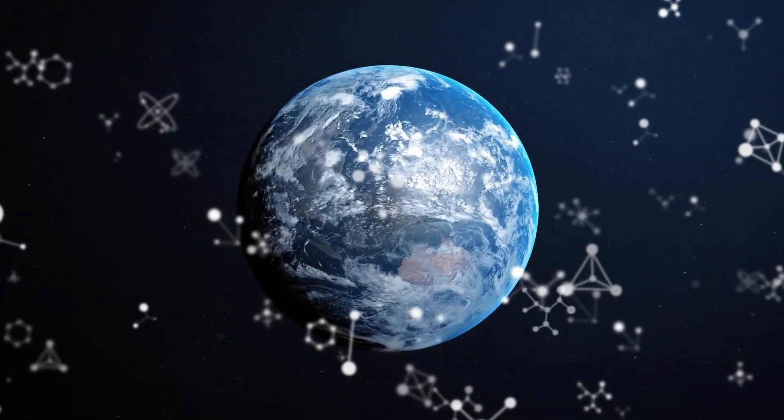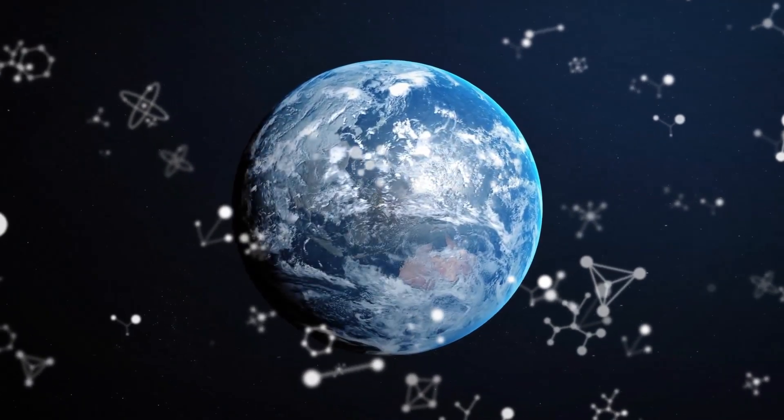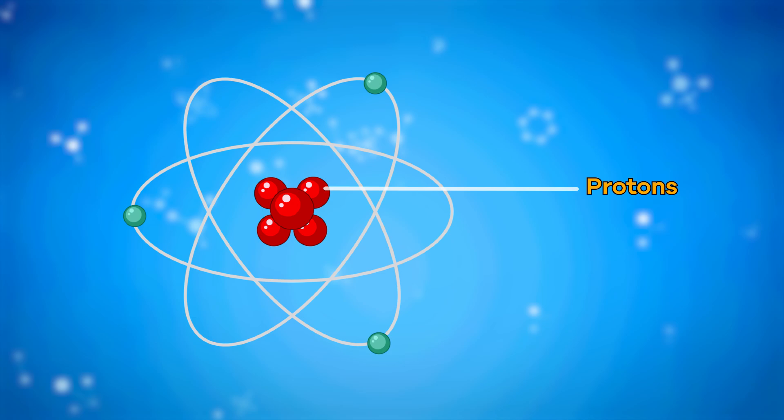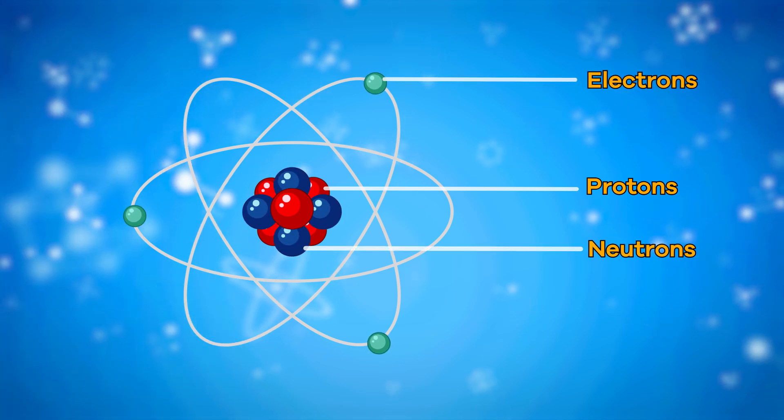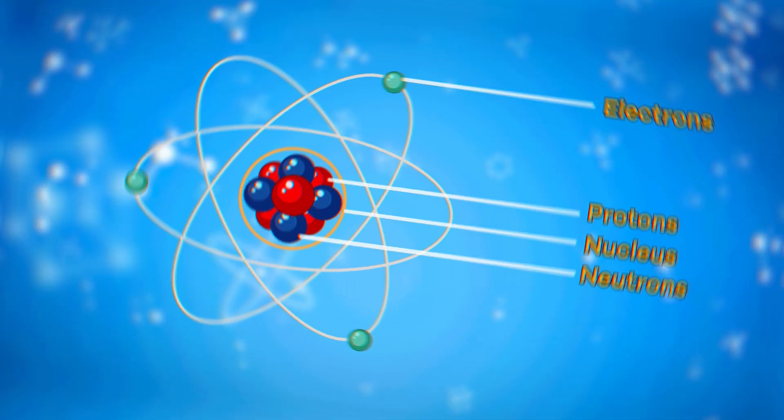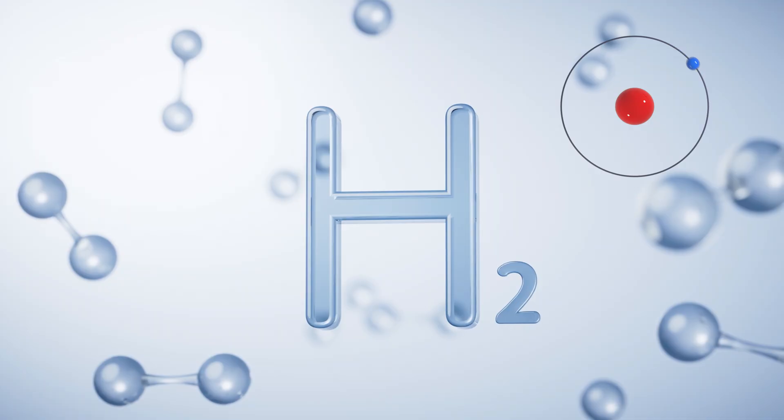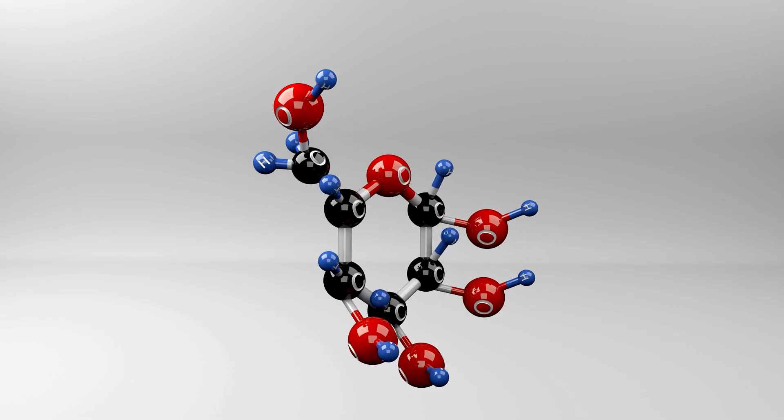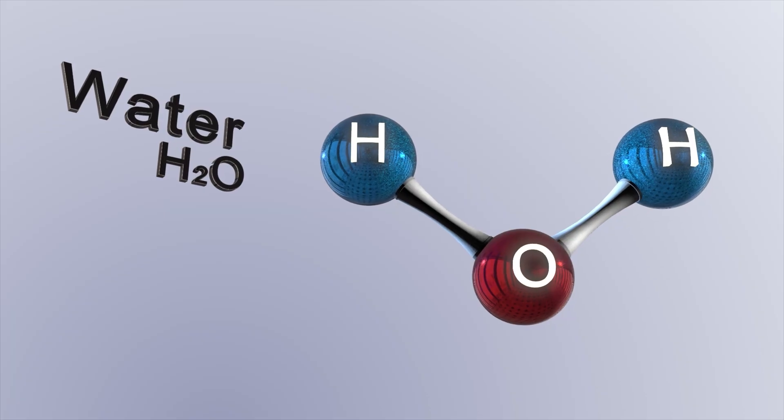To sum things up, atoms are the basic building block for all matter in the universe. Atoms have protons, electrons, neutrons, and a nucleus. Elements are chemical substances made from one type of atom. And when different elements bond with each other, they form molecules.